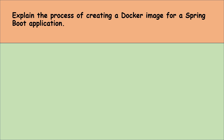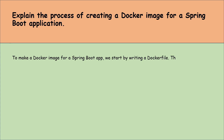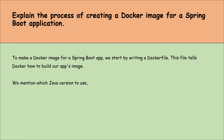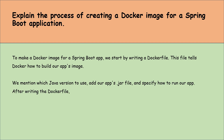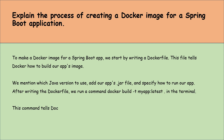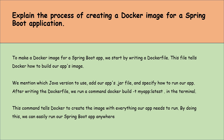Explain the process of creating a Docker image for a Spring Boot application. To make a Docker image, we start by writing a Dockerfile. This file tells Docker how to build our app's image. We mention which Java version to use, add our app's JAR file, and specify how to run our app. After writing the Dockerfile, we run a Docker build command in the terminal. This command tells Docker to create the image with everything our app needs to run. By doing this, we can easily run our Spring Boot application anywhere Docker is available, making our apps more portable and easy to deploy.